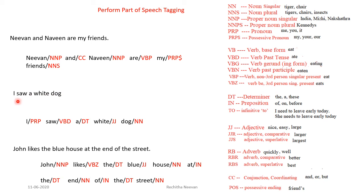Consider: 'I saw a white dog.' 'I' is pronoun PRP. 'Saw' is verb past tense VBD. 'A' is determiner DT. 'White' is adjective JJ. 'Dog' is noun NN. Finally: 'John likes the blue house at the end of the street.' 'John' is proper noun NNP. 'Likes' is VBZ. 'The' is determiner DT. 'Blue' is adjective JJ. 'House' is noun NN. 'At' is preposition IN. 'The' is determiner DT. 'End' is noun NN. 'Of' is preposition IN. 'The' is determiner DT. 'Street' is NNP.